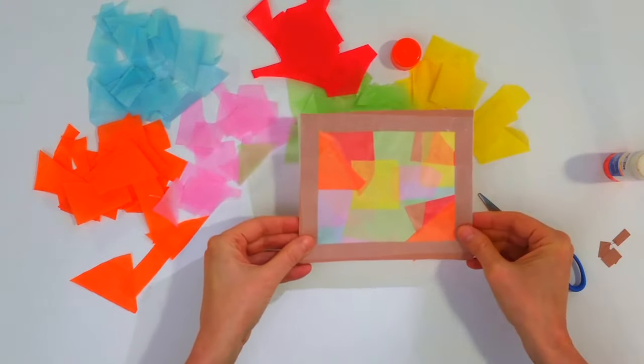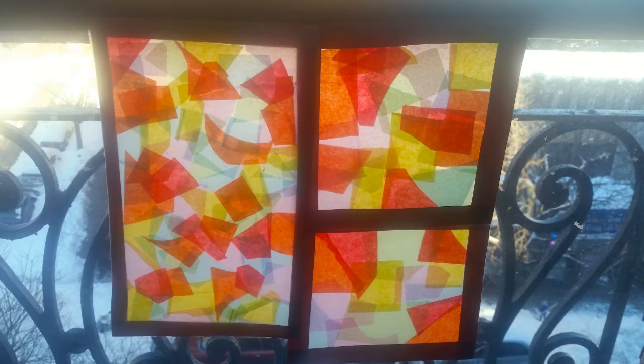And there you have the stained glass made out of tissue paper. And here's what it looks like when you hang it in front of a window. And this is where it's hanging in front of a lamp.